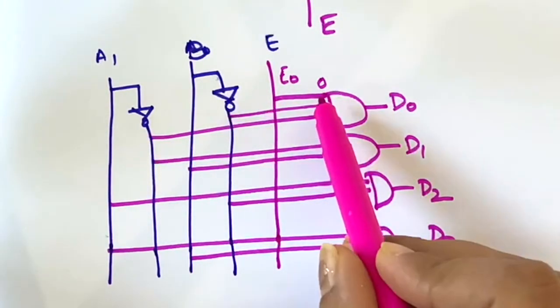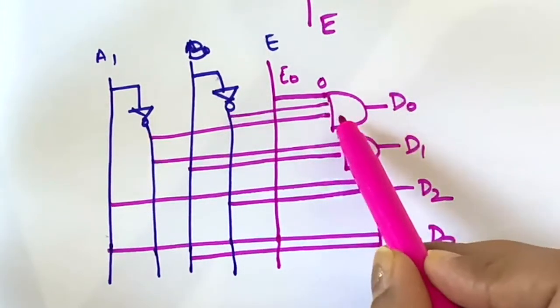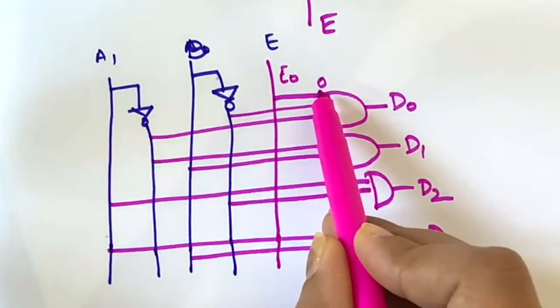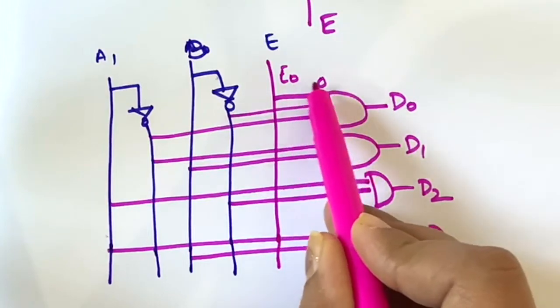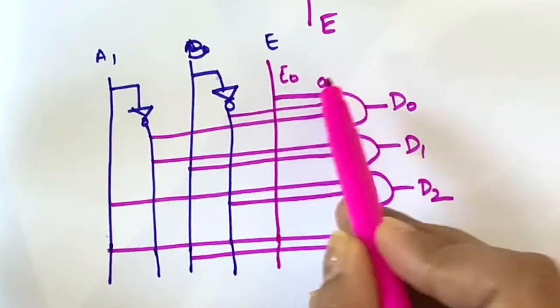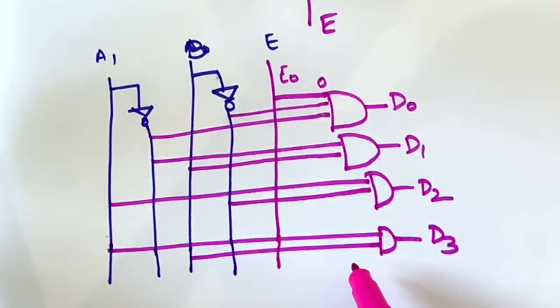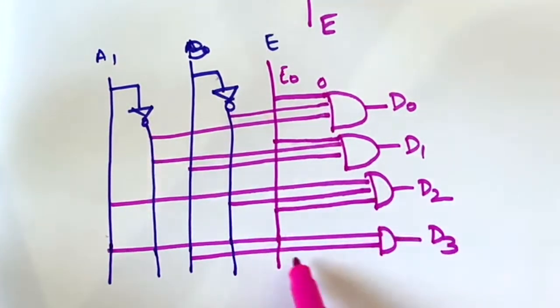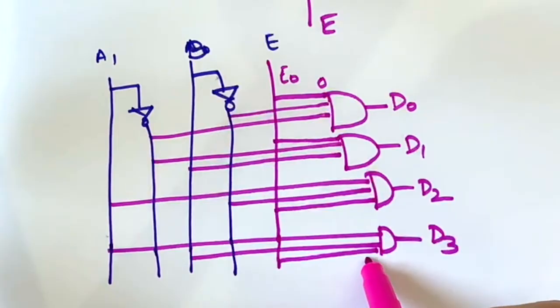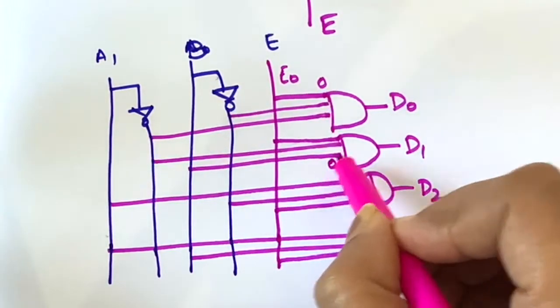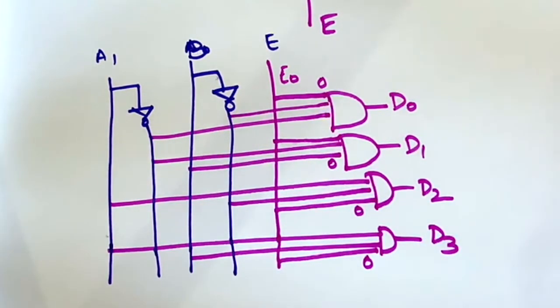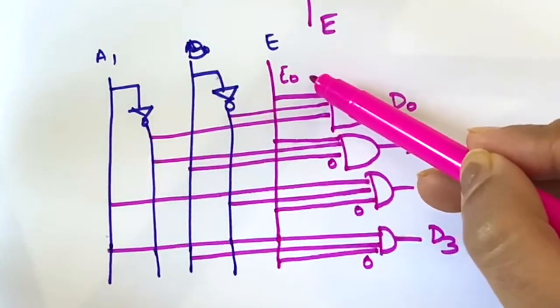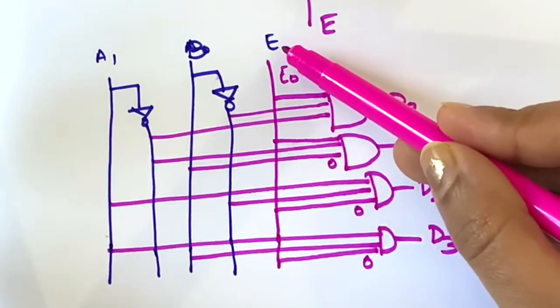In the AND gate, if any of the input is 0, then the AND gate is disabled, it will not work. So suppose we give E equal to 0. What will happen? Every AND gate will get 0 as one of its values. There are three inputs in the AND gates, and one of the inputs, the value of E, is always 0.